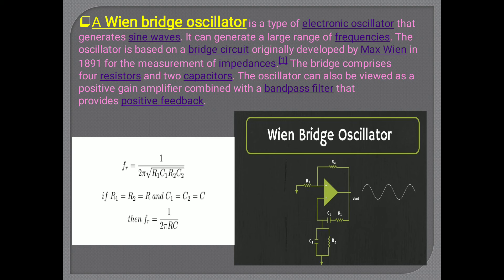The frequency of oscillation can be found using: F = 1 / (2π√(R1·C1 · R2·C2)), since two resistors and two capacitors are connected in the oscillator. If the resistances of both resistors are equal (R1 = R2 = R) and the capacitances of both capacitors are also equal (C1 = C2 = C), then the formula for frequency of oscillation simplifies to F = 1 / (2πRC).